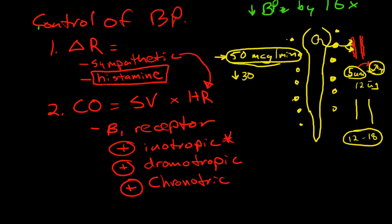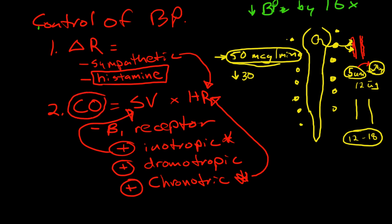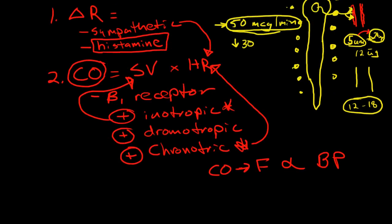These are going to have the most dramatic effect. The inotropic response increases stroke volume by having a more forceful contraction — going from an EF of 65% to an EF of 80%. The positive chronotropic response increases heart rate. Both work together to increase cardiac output. Remember, cardiac output equals blood flow, and it has a one-to-one relationship with blood pressure. So if you increase cardiac output by 50%, you're going to increase blood pressure by 50%. Those are the major determinants of blood pressure.